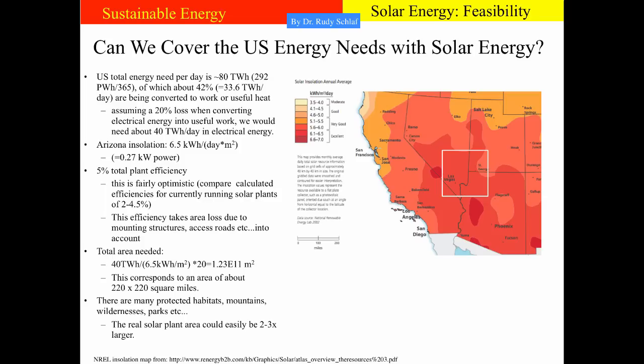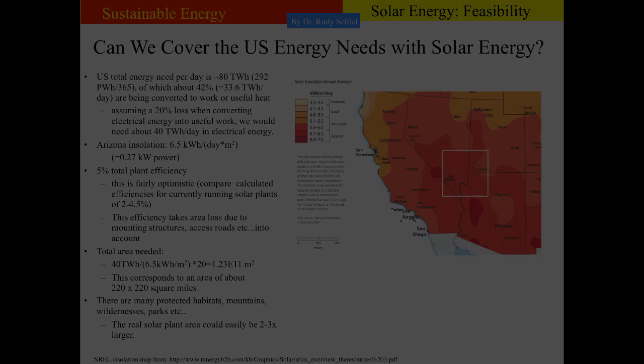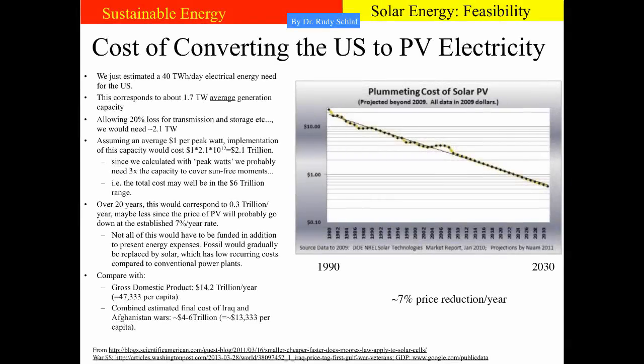Of course this is not a very realistic scenario. Much more realistic would be to assume that solar cells will be distributed all across the US and that many roofs of houses and areas already available will be used. But it is obvious that it would be a major effort to build up enough solar cells to cover the entire energy needs with solar energy. Area is of course only one part of the solar energy equation — cost certainly is another.